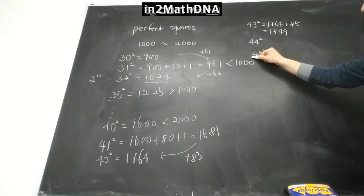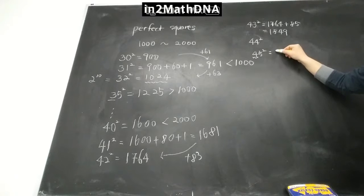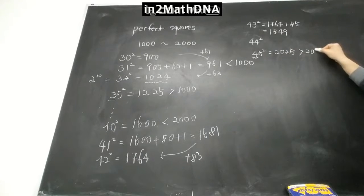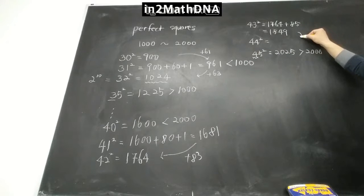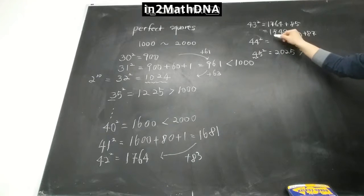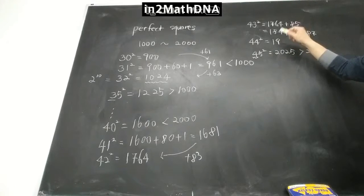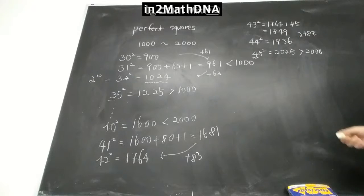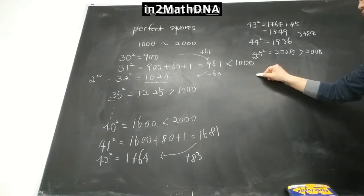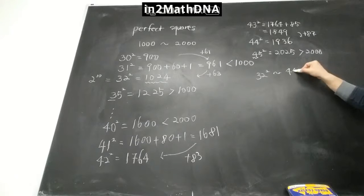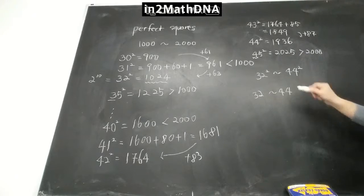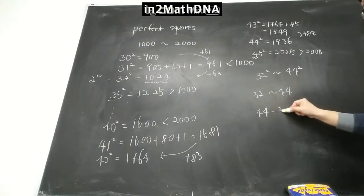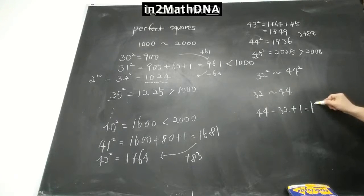For 44 squared, add 87 to get 1936. And 45 squared has last two digits 25 and first digits 4 times 5 equals 20, giving 2025 — already greater than 2000. So perfect squares between 1000 and 2000 run from 32 squared through 44 squared. That's 44 minus 32 plus 1, which equals 13 perfect squares.